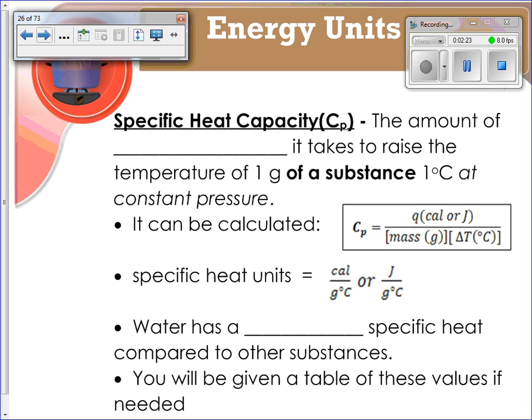Specific heat capacity is the amount of energy it takes to raise the temperature of one gram of a substance one degree Celsius at constant pressure. It can be calculated using this equation right here. You've got specific heat capacity equals Q, which can be calories or joules, over mass in grams over change in temperature. You might recognize if you rearrange this equation, you end up with something we've used in the past, which is Q equals mc∆T.